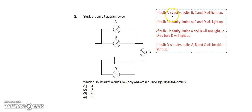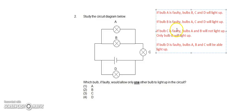Now, if we look at the notes we have written, which one would allow only one other bulb to light up in the circuit? If we look at this option, only bulb C — if bulb C is faulty, bulbs A and B will not light up, and only one other bulb will light up which is bulb D. So the answer is C.